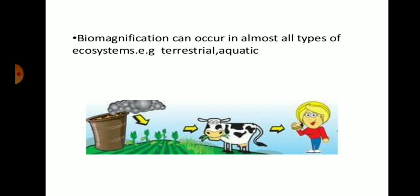Biomagnification can occur in almost all types of ecosystems — terrestrial, aquatic, or aerial — because pollution occurs through air, water, and soil. The accumulation of pesticides in organisms through the food chain is generally found in all types of ecosystems.